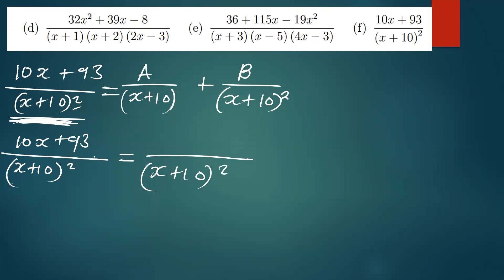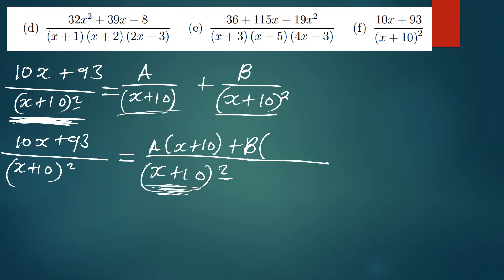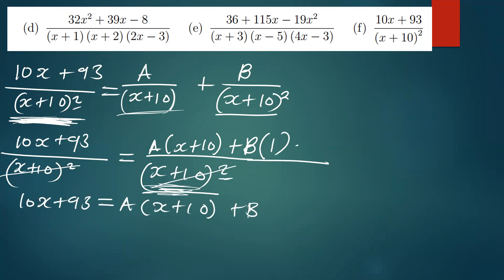Before cancelling, let us first find what is supposed to be on top. When we divide, we remain with one here — because the power of two means two factors multiplying — so we get A times open bracket x plus 10, plus B. The expressions cancel and we're left with: 10x plus 93 equals A(x plus 10) plus B.